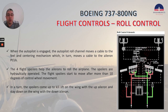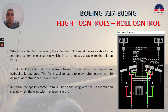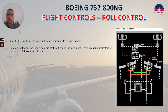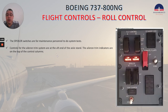The four flight spoilers help the ailerons to roll the airplane. Spoilers are hydraulically operated. The flight spoilers start to move after more than 10 degrees of control wheel movement. In a turn, the spoilers come up to kill lift on the wing with the up aileron, and stay down on the wing with the down aileron.